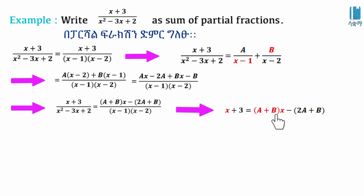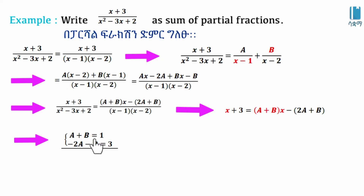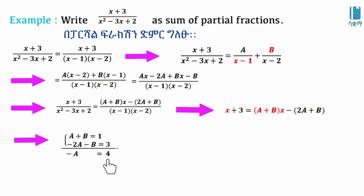Matching coefficients: the x coefficient gives A + B = 1, and the constant term gives -2A - B = 3. Solving the system: A + B = 1 and -2A - B = 3, adding gives -A = 4, so A = -4.